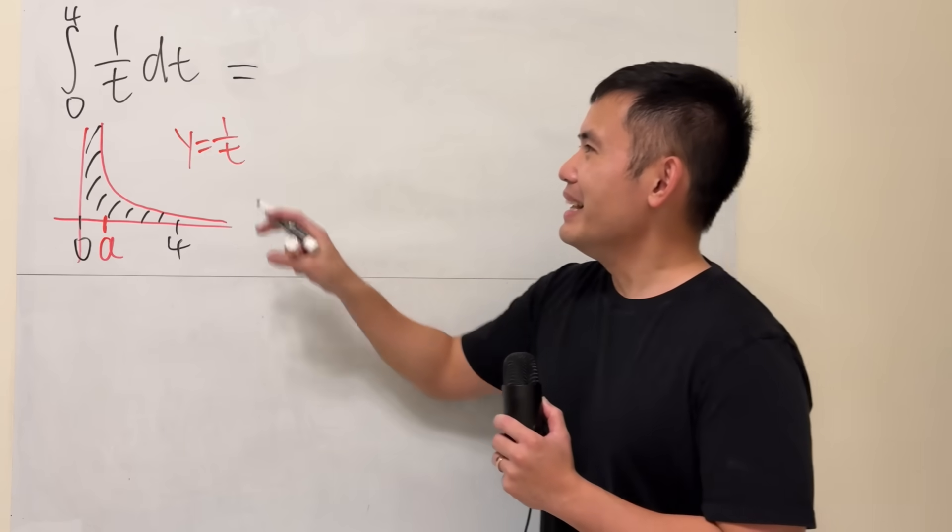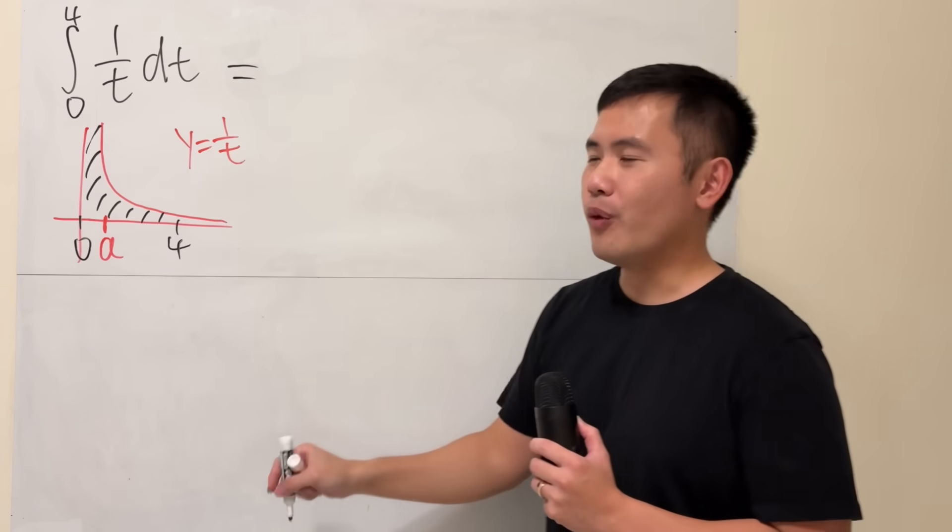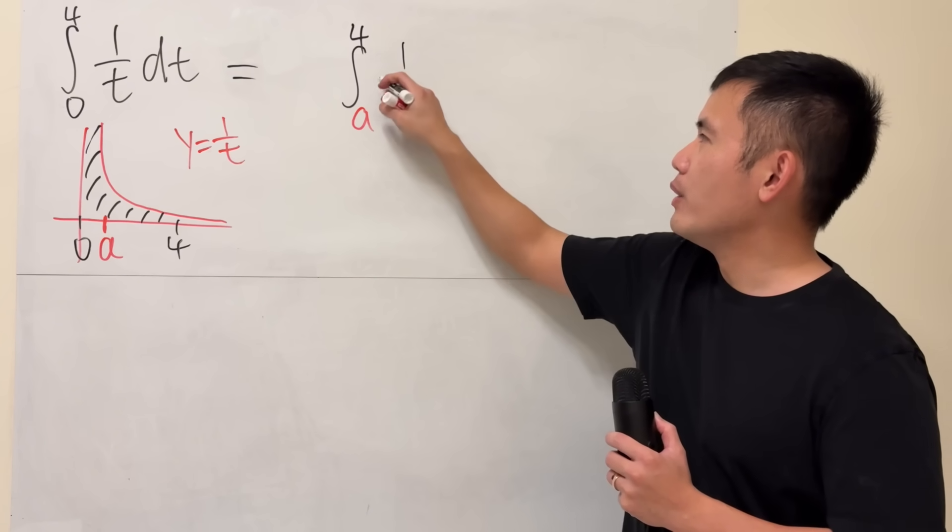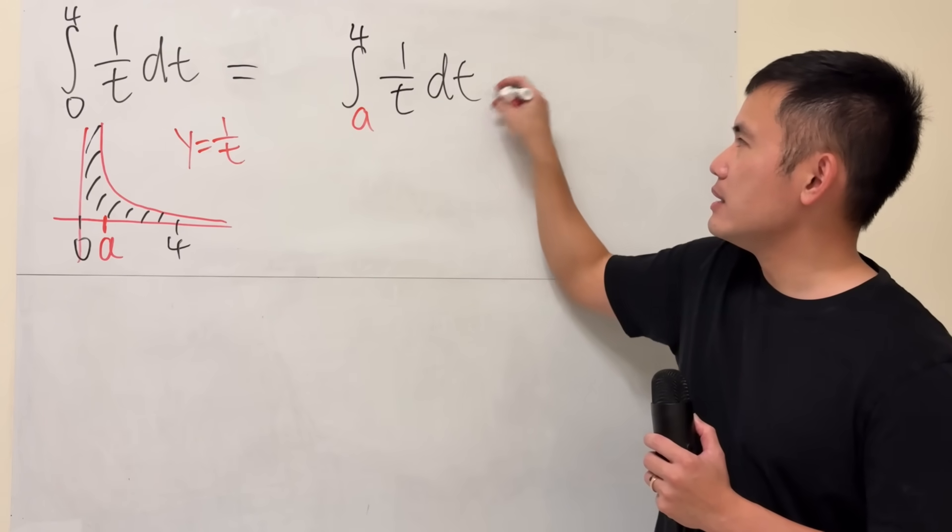So have a look. Instead of integrating this from 0 to 4, I'm going to integrate that from a to 4. And then, 1 over t dt.